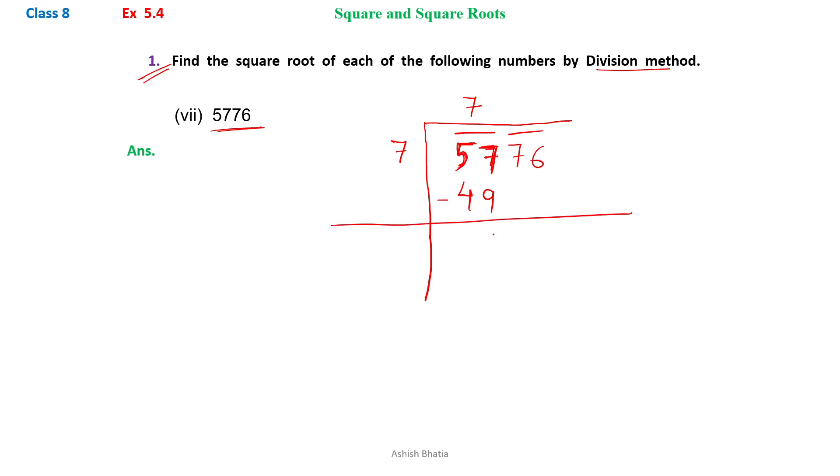After subtraction, we get 8. We copy down the pair 76. And as the rule says, we have to add the same number here, so it becomes 14.